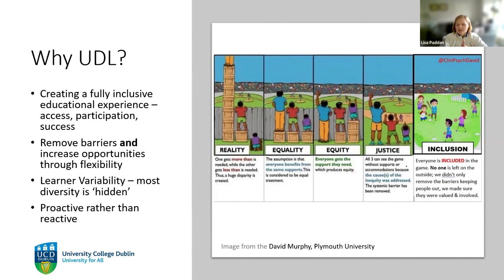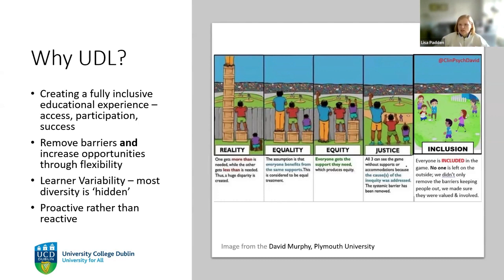Sometimes it can seem overwhelming when you look at everything that needs to be done to create something fully inclusive for every individual. But taking what we consider the plus one approach to your practice can be really beneficial. Making small incremental positive steps will ultimately get you to the place where everything is as inclusive as possible, always thinking about the end user when designing or procuring a service.